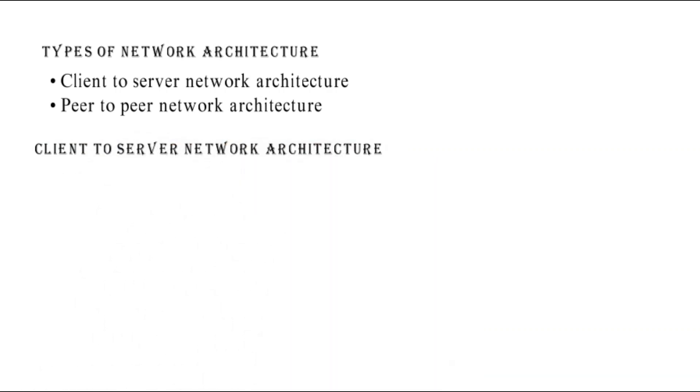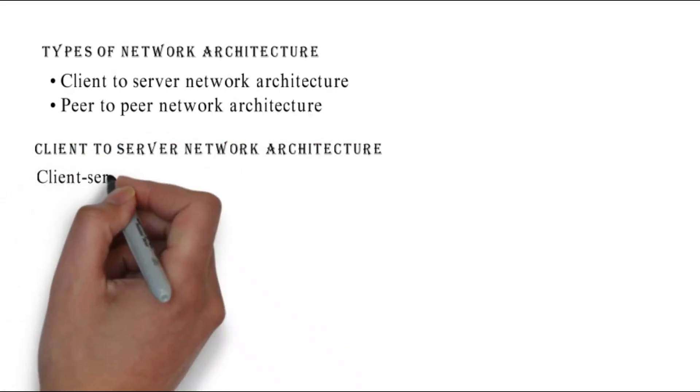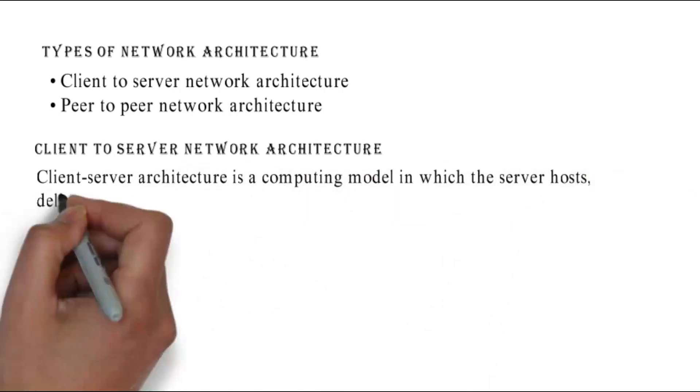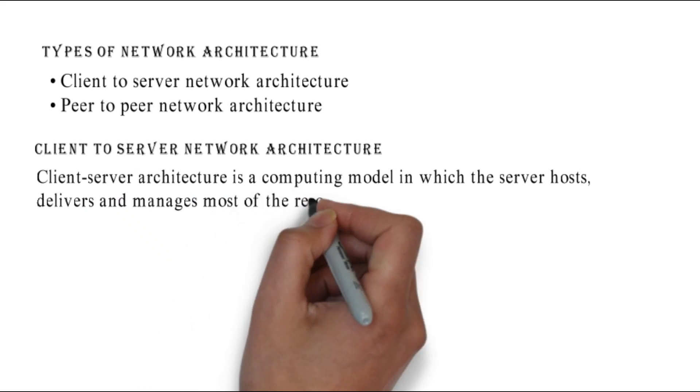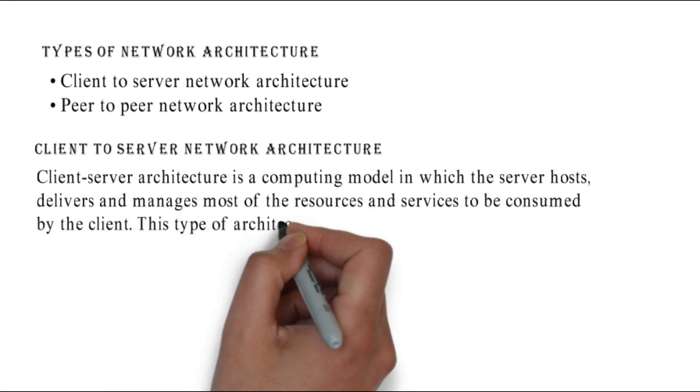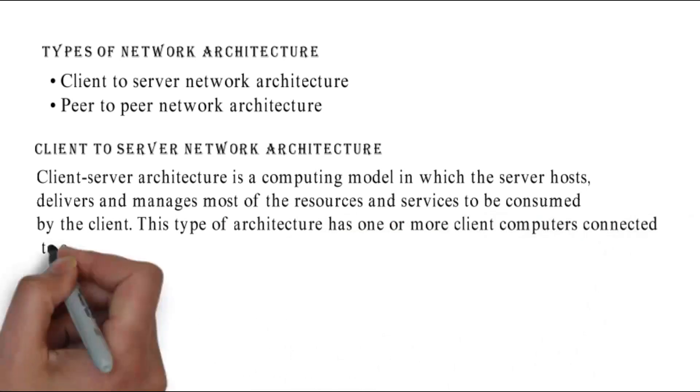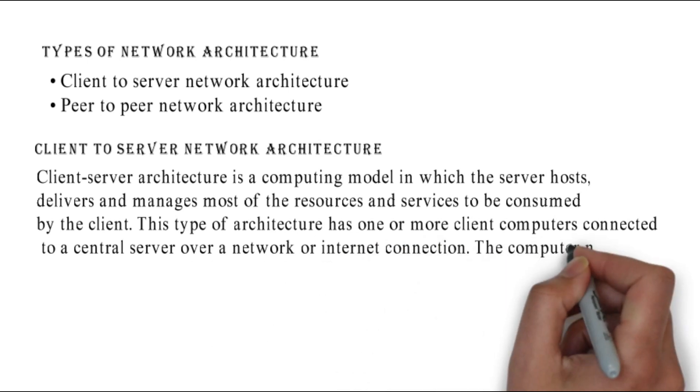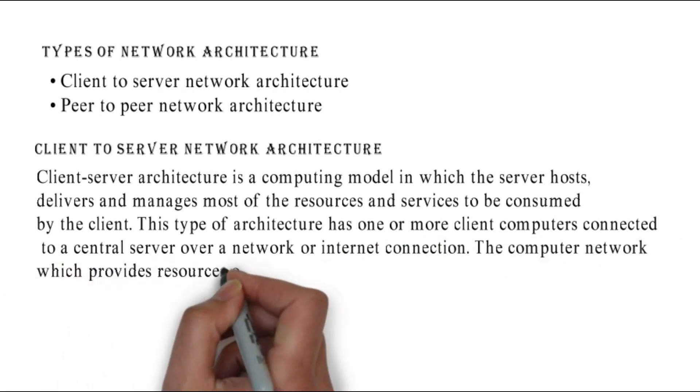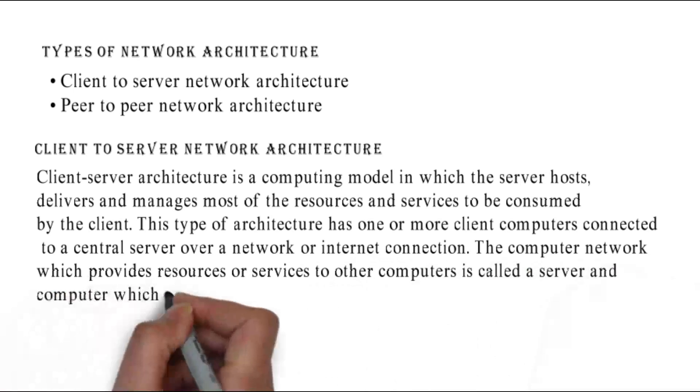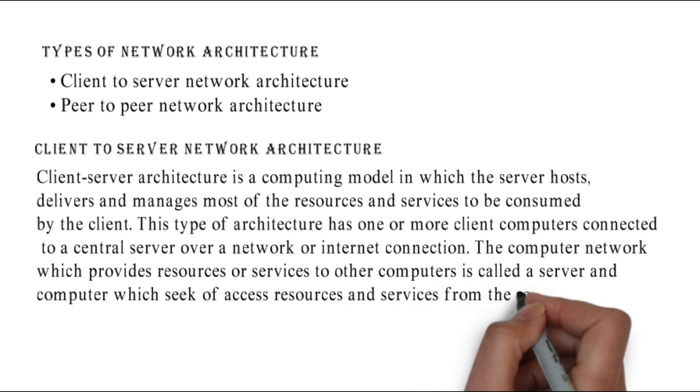Client to server network architecture. Client server architecture is a computing model in which the server hosts, delivers, and manages most of the resources and services to be consumed by the client. This type of architecture has one or more client computers connected to a central server over a network or internet connection. The computer network which provides resources or services to other computers is called a server, and computer which seeks access to resources and services from the server are called client.